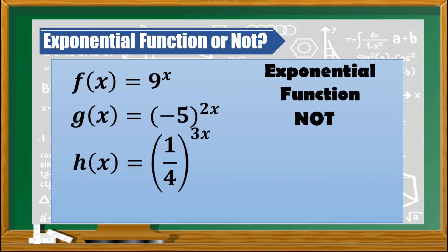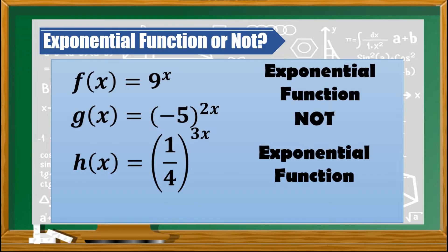h of x is equal to 1 fourth raised to the power of 3x — this is an exponential function. And j of x is equal to x raised to the power of 4 — this is not an exponential function. Looking at this function, the variable is in the base, and this is what we call a polynomial function, specifically a quartic function.